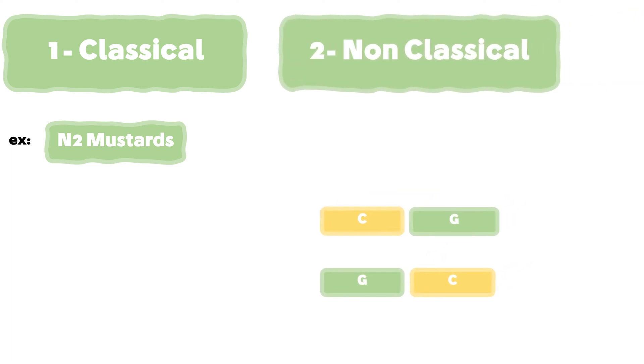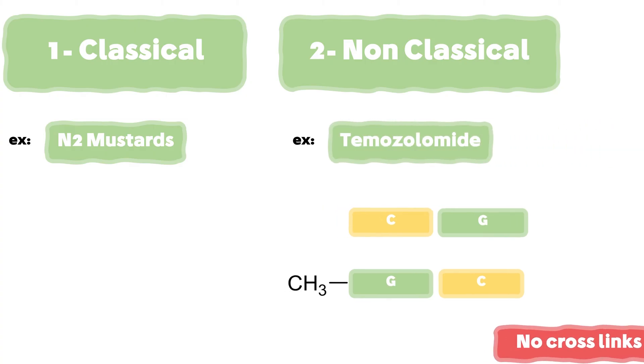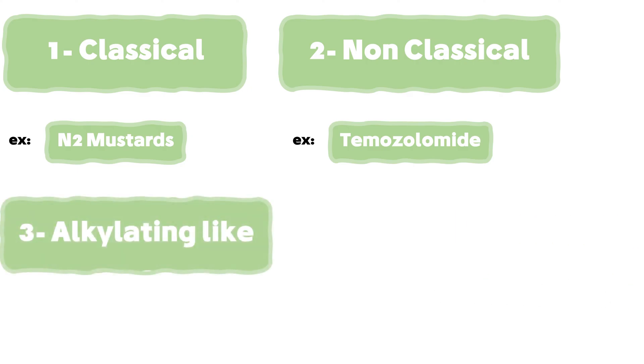The second type of alkylating agents is the non-classical compounds. They are characterized by methylating the DNA, instead of alkylating it. Therefore, they do not form crosslinks. Temozolomide is an example of this type of reagents.